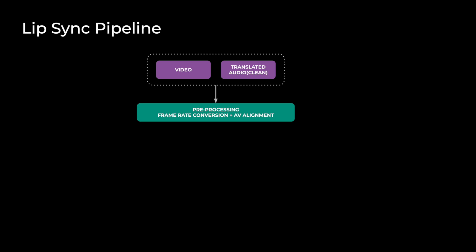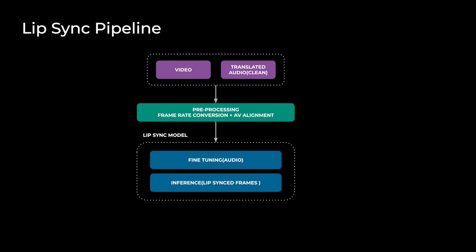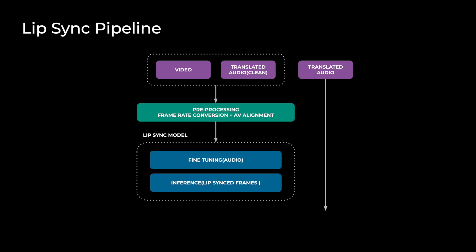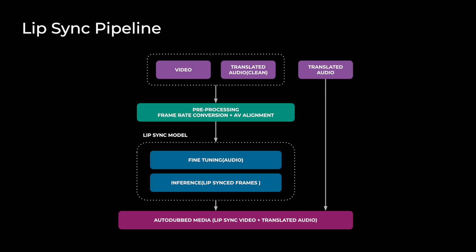Although the lip sync model is generalized, we further improve quality per user with one-shot training per reel and language, then run inference to generate lip sync frames. The lip sync video frames from the previous step are muxed with translated audio, including ambience match, and transcoded to ABR lanes for optimal delivery.